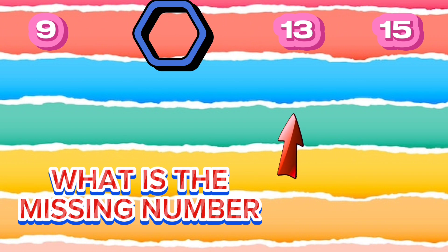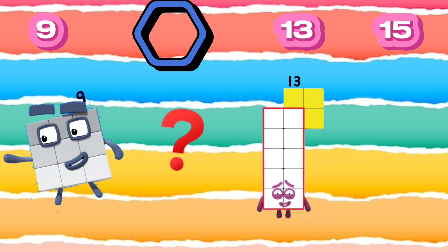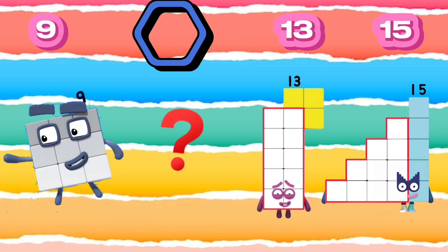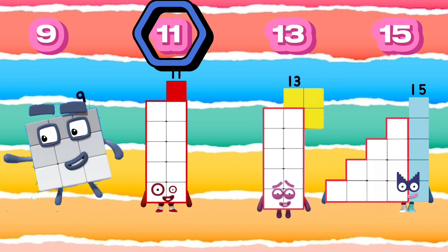What is the missing number? 9, 13, 15. The missing number is 11. The number sequence is 9, 11, 13, 15.